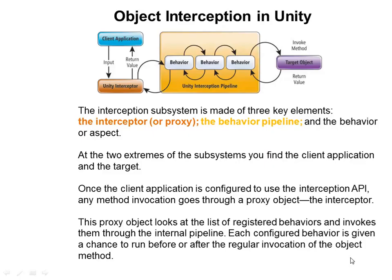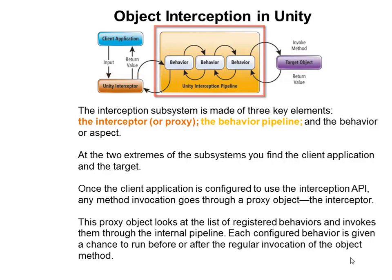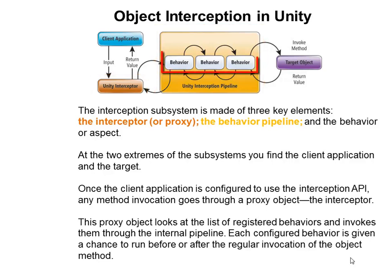In our next example we are going to implement logging by using Unity. Object interception in Unity: the interception subsystem is made up of three key elements — the interceptor or proxy, the behavior pipeline, and the behavior or aspect. At the two extreme ends of the subsystem you will find the client application and the target.